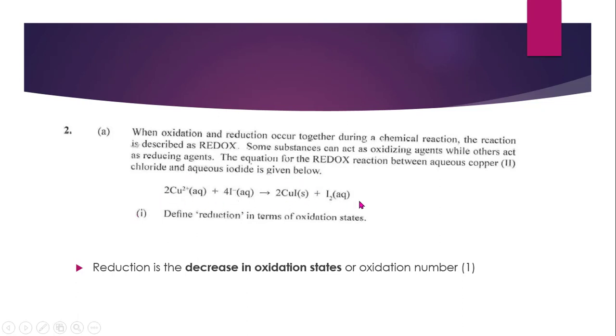The equation for redox reaction between aqueous copper 2 chloride and aqueous iodide is given below. They give you the chemical equation and you had to define reduction in terms of oxidation states. So reduction is the decrease in oxidation states or oxidation number and for that you get a very easy simple one mark.